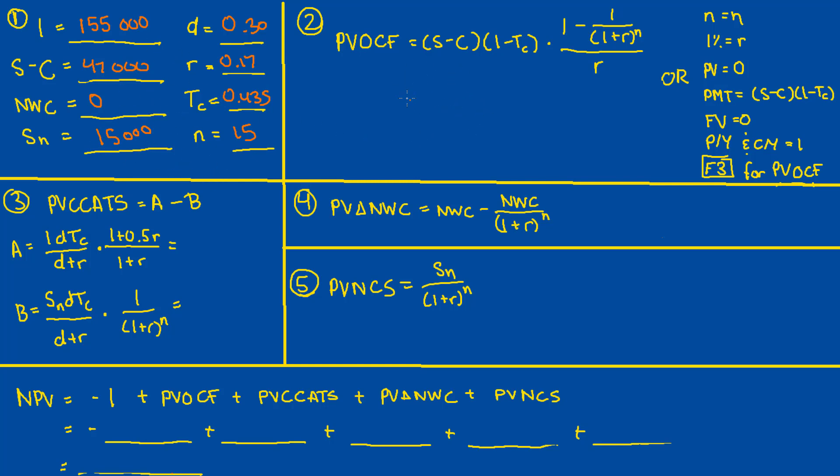Now all that's left to do is just plug in our values as we did before. So PVOCF should come up to $141,383.79. And for part A for PVCCATS, we should get $39,910.60. For part B, we should get $2,222.60, and that should subtract out to $37,688.